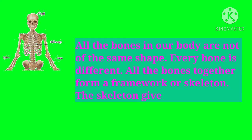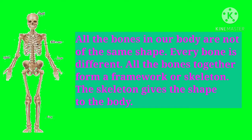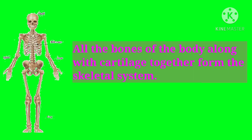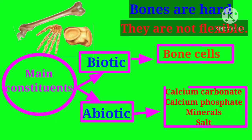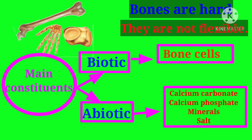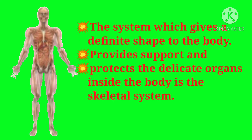Every bone is different — all the bones together form a framework or skeleton, and the skeleton gives a shape to the body. All the bones of the body along with cartilage together form the skeletal system. Bones are hard and not flexible. Bones are composed of two main constituents: bone cells, which are biotic, while calcium carbonate, calcium phosphate, minerals, and salts are the abiotic constituents. Calcium imparts strength to the bones. The skeletal system gives a definite shape to the body, provides support, and protects the delicate organs inside.